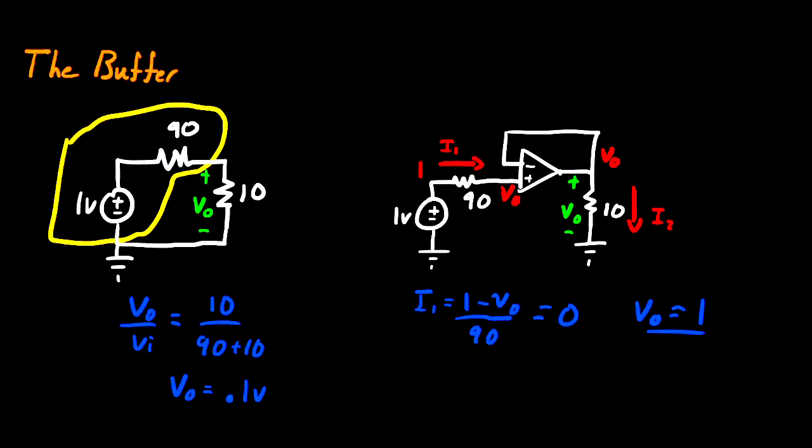What the buffer does is it reflects your input voltage to the output of your circuit without having that loading effect because of the high input impedance of the op amp. That's it for this video, and I'll see you next time.